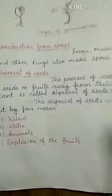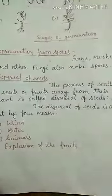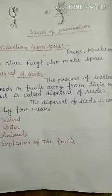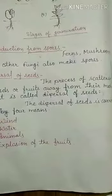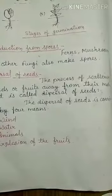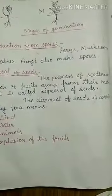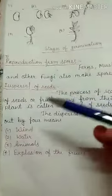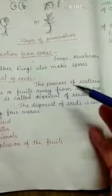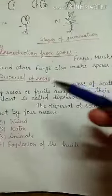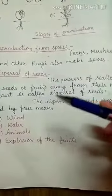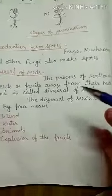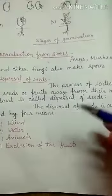Dispersal of seeds: most plants produce a very large number of seeds. If all of them were to fall under the mother plant, not all would survive. The process of scattering of seeds or fruits away from their mother plant is called dispersal of seeds.